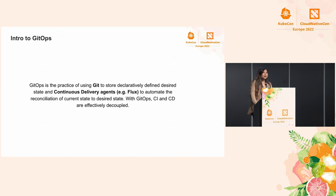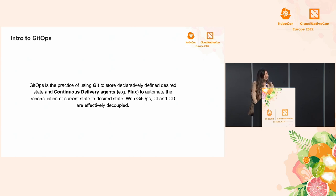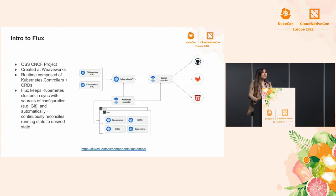Weaveworks actually coined the term GitOps. Today technology has advanced to the point where it's not required that you use Git, but some other source control versioning system — that is where the term came from. GitOps is the practice of using Git to store declaratively defined desired state and continuous delivery agents like Flux to automate the reconciliation of current state to desired state. With GitOps, CI and CD are effectively decoupled. GitOps itself is agnostic to tooling, but in today's workshop we're going to be using Flux, which is an open source CNCF project created at Weaveworks. Flux's runtime is comprised of several Kubernetes controllers as well as their corresponding CRDs.